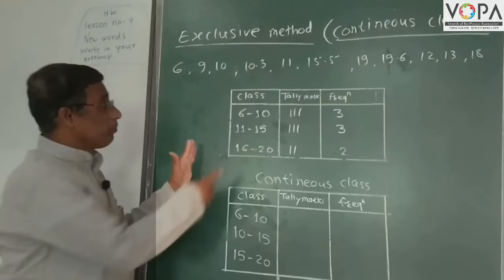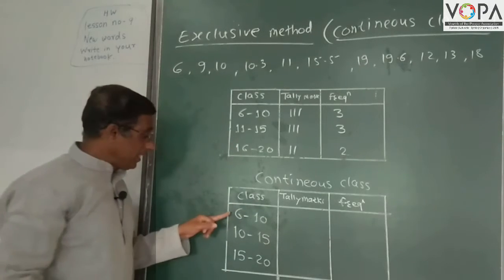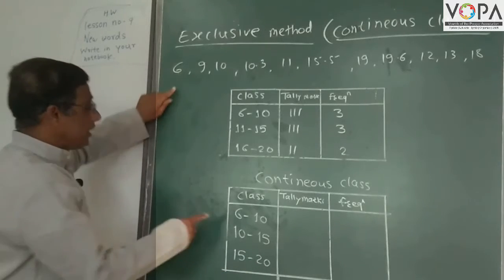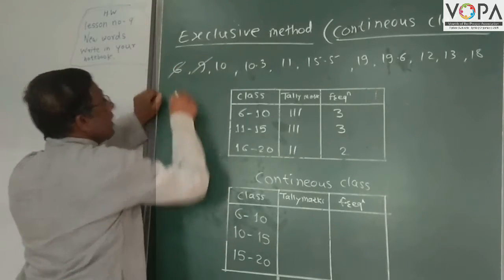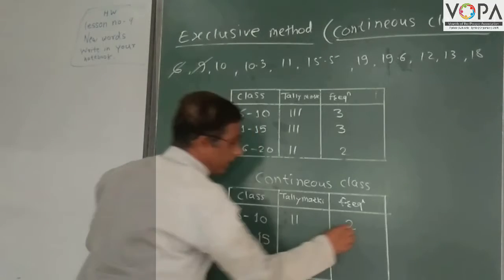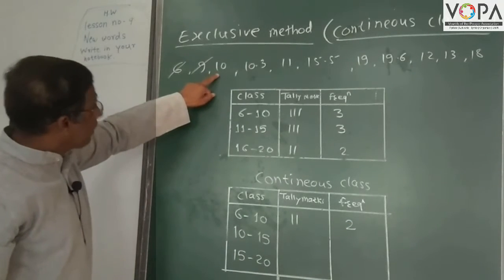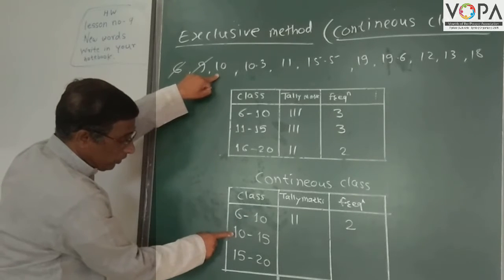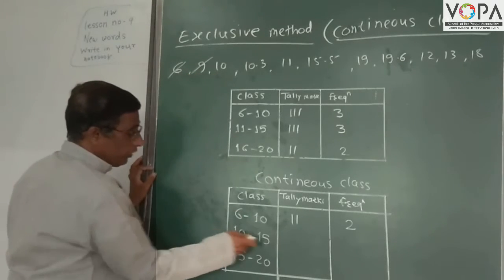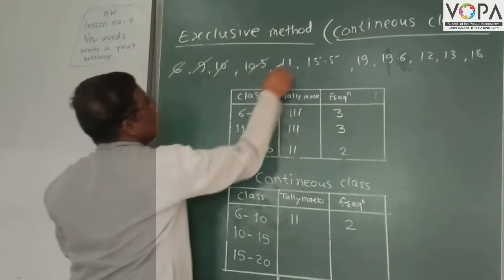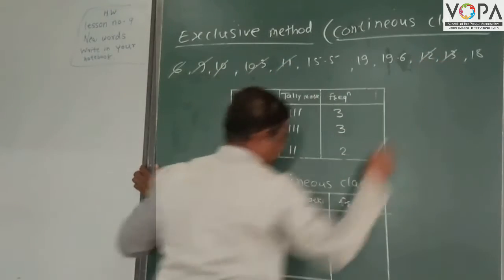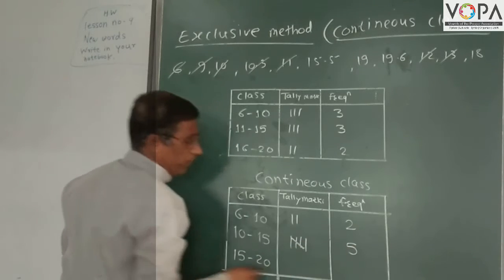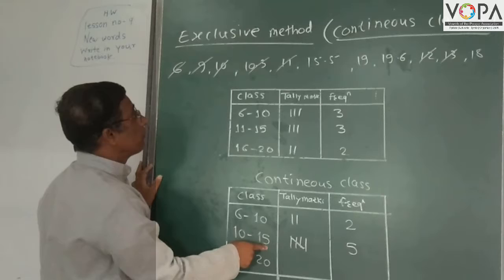So first we make continuous classes: 6 to 10, 10 to 15, 15 to 20. In the class 6 to 10, only two observations are taken. The observation 10 cannot be included in this class, so it goes into the next class. In class 10 to 15, we count 1, 2, 3, 4, 5 — frequency is 5 for class 10 to 15.